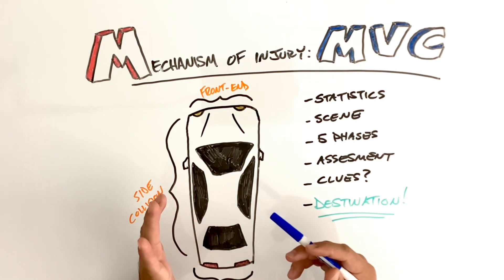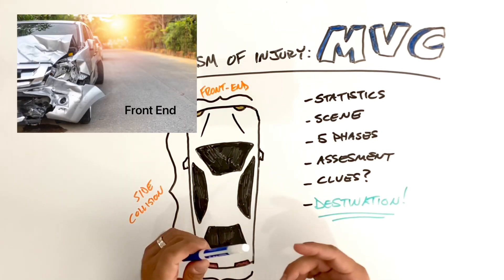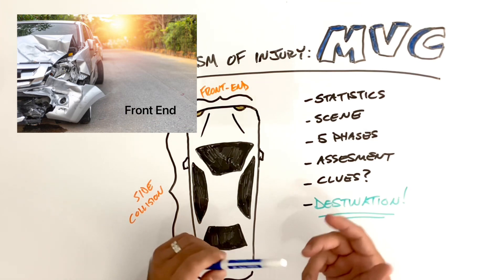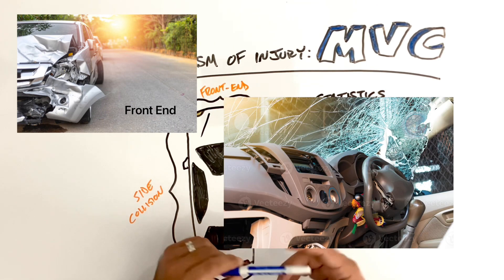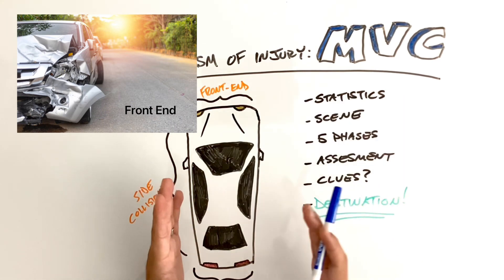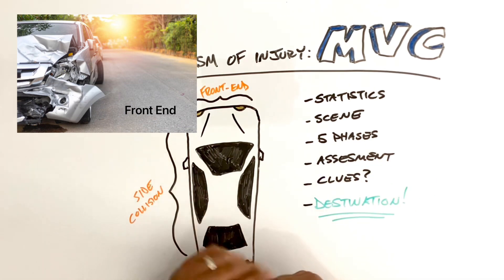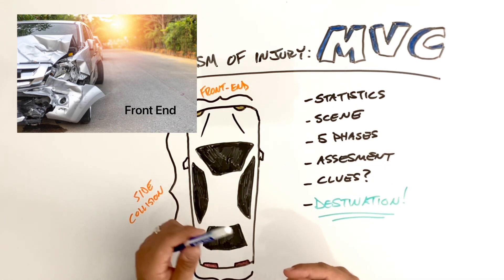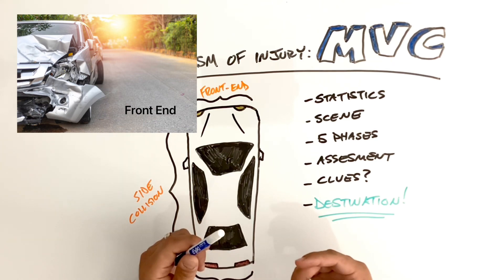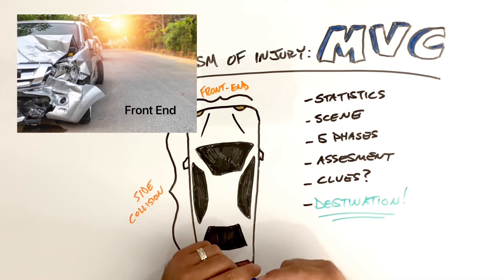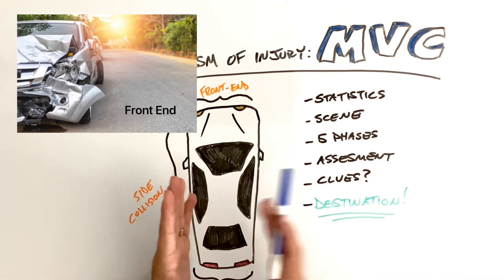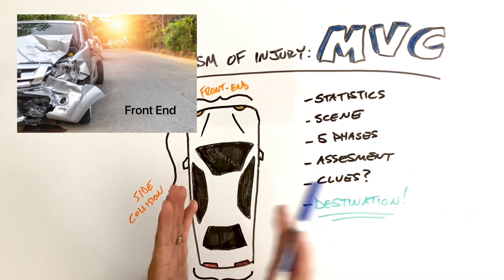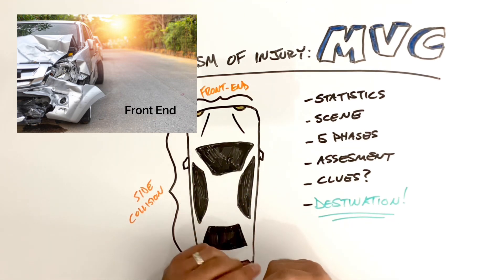Starting with a head-on or frontal impact: you can see a deformed front end of the vehicle, a cracked windshield, maybe a deformed steering column or dashboard. Knowing the rapid deceleration of a front end impact, the body clues would be a bruised or lacerated head and face, maybe spidering of the windshield, bruised neck or chest, bruised abdomen, knee injuries, or a dislocated kneecap. When rapid deceleration occurs and the patient's body continues forward, they take the brunt of that impact on the front of their body.